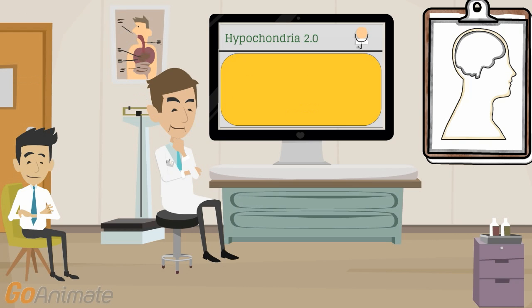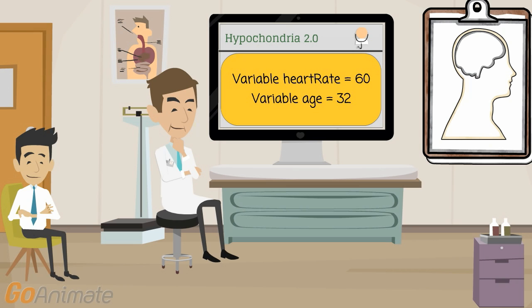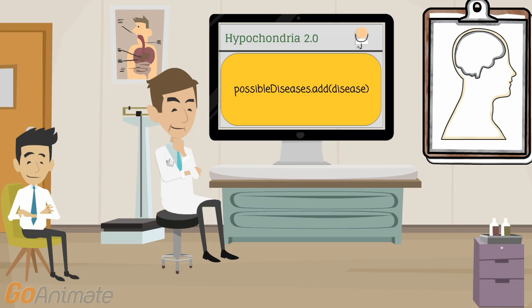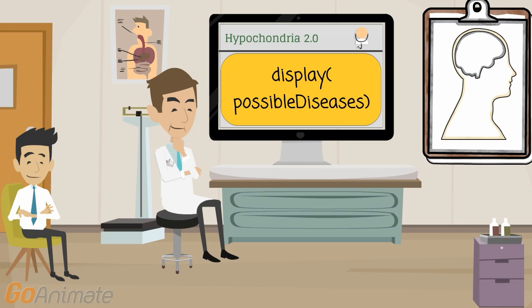Let's see again what we programmed. First, we stored the variables. Then we started a loop. In the loop, we compared the symptoms from several diseases to the symptoms from the patient. Then we stored the matching diseases into a list. And finally, we displayed the list of the possible diseases to the user.